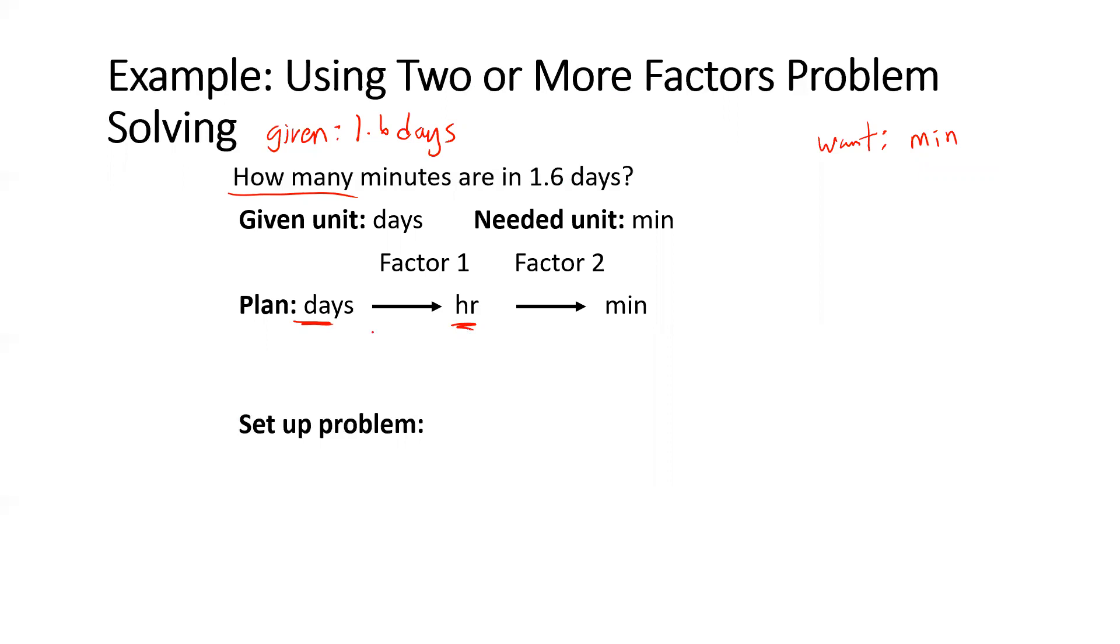And then I can go from hours to minutes. One hour, 60 minutes. We did that in that last problem, but now we have to do more than one conversion factor. Why? Unless you're weird and you know how many minutes in a day right off the bat, most people don't. So you would do it step by step and then you could railroad track this. Start with your 1.6 days, days cancel, hours cancel, and I'll be left with minutes.